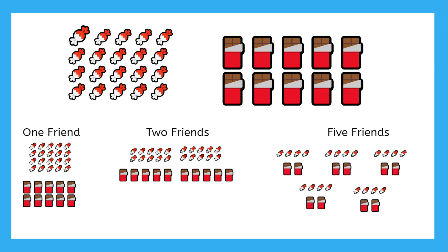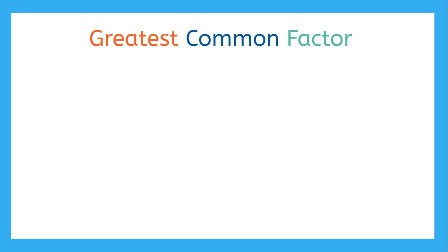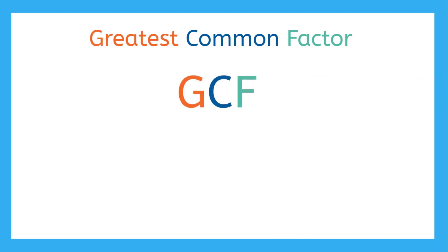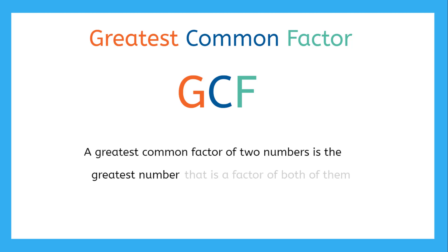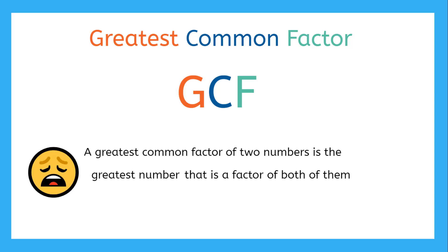Do you think Sam could have even more friends to share this candy with? To solve Sam's candy problem, we need to learn about the Greatest Common Factor. Maybe you've seen this before as GCF. Do you know what it means? A Greatest Common Factor of two numbers is the greatest number that is a factor of both. Okay, that sounds really confusing, but let's work through this together and we'll figure it out.